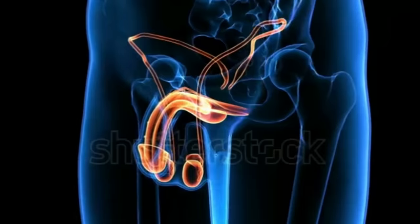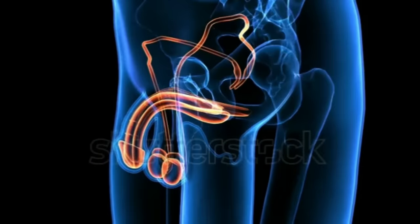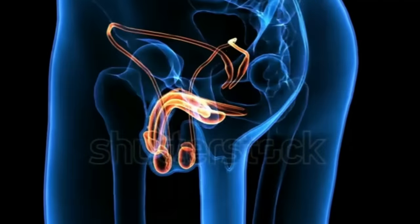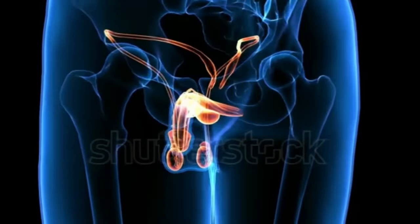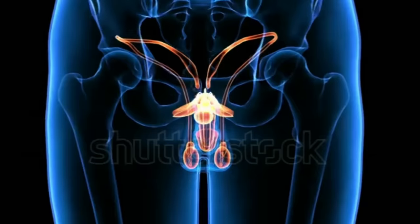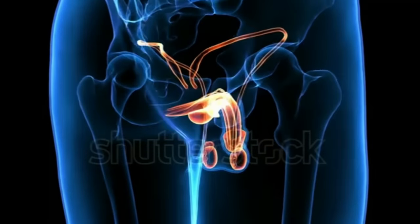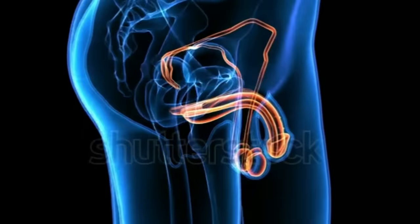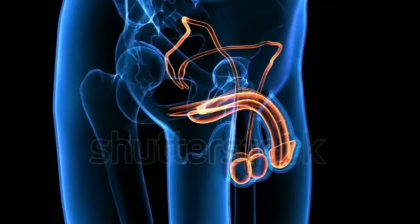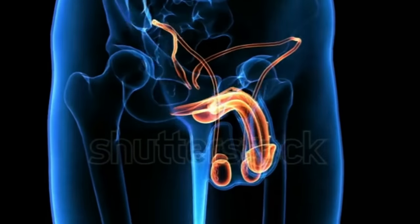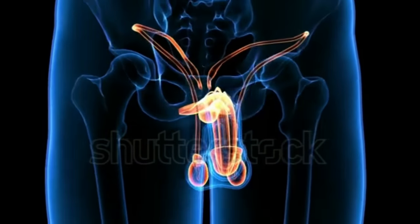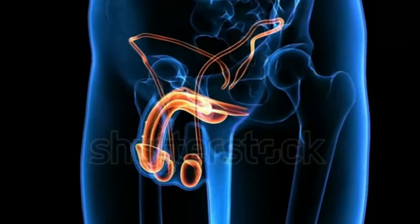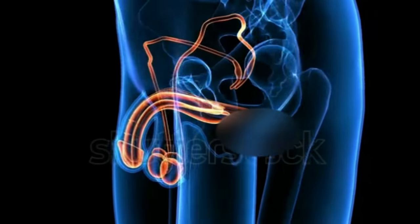The human male reproductive system consists of a number of sex organs that are part of the human reproductive process. In the case of men, these sex organs are located outside the man's body, around the pelvic region.